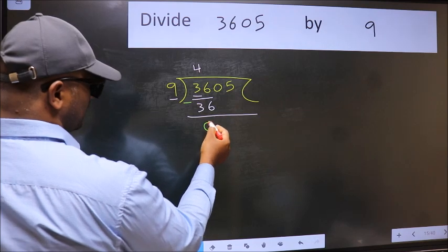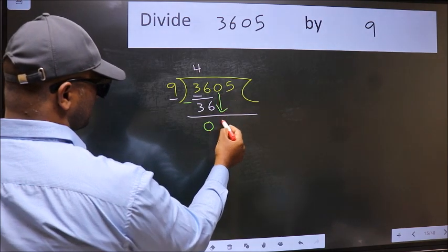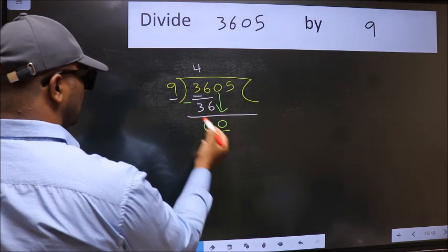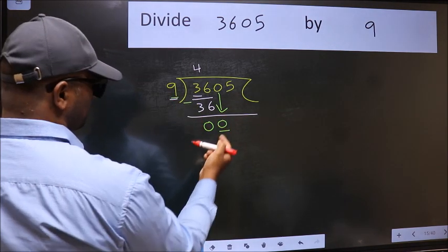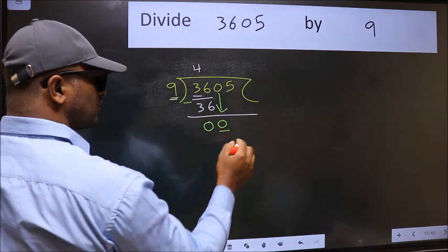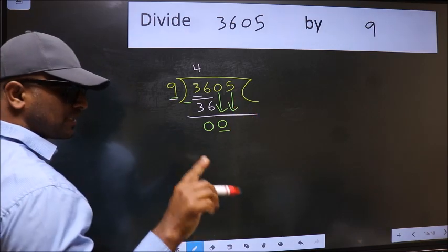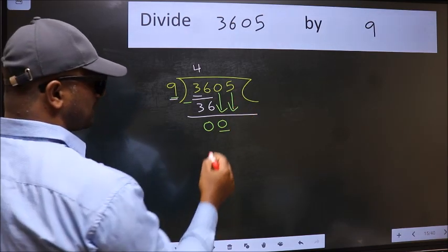After this, bring down the beside number, so 0 down. Here we have 0 and here 9. 0 is smaller than 9, so we should bring down the second number.